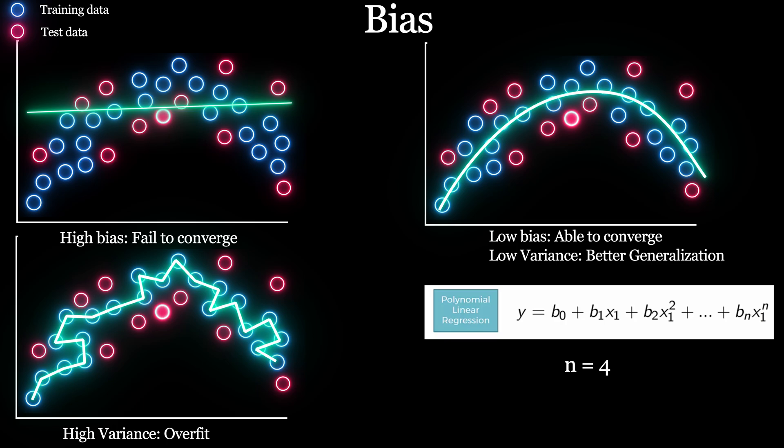As we saw, a model with high bias makes very simplistic assumptions and underfits the data, whereas a model with high variance captures noise and overfits the data. But when a model has low bias and low variance, it adapts very well on the dataset.